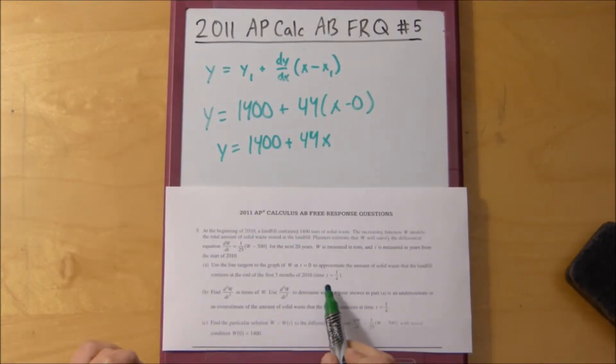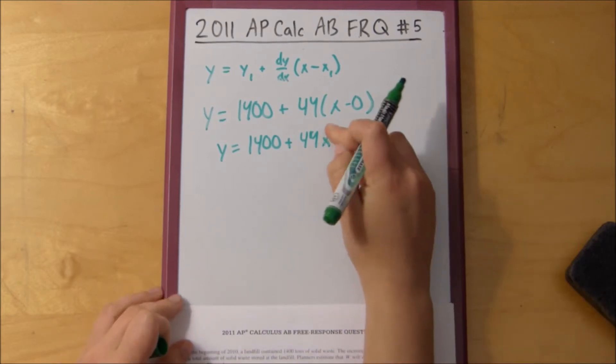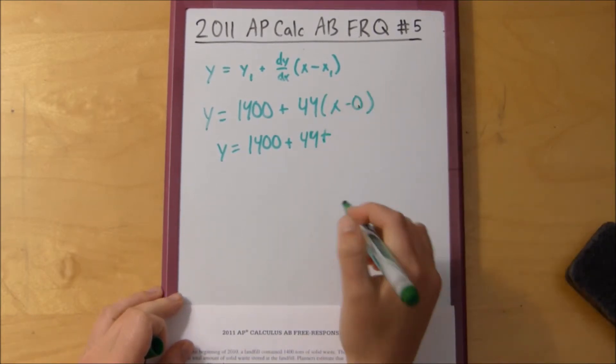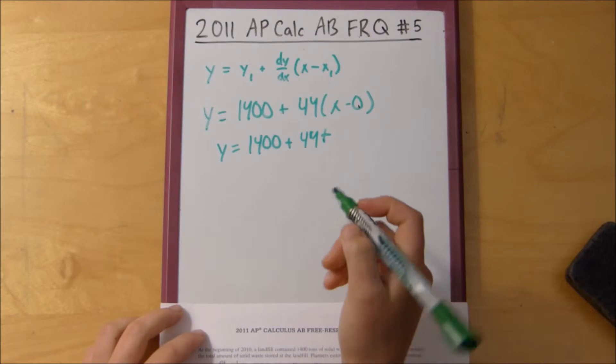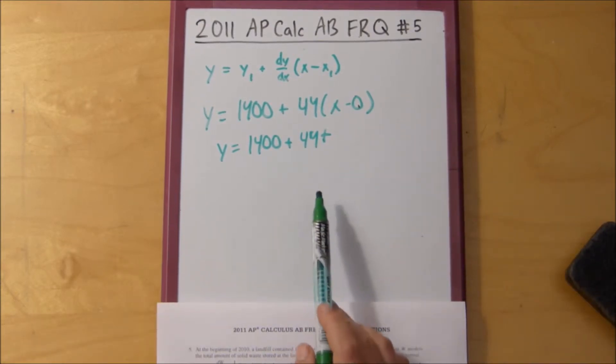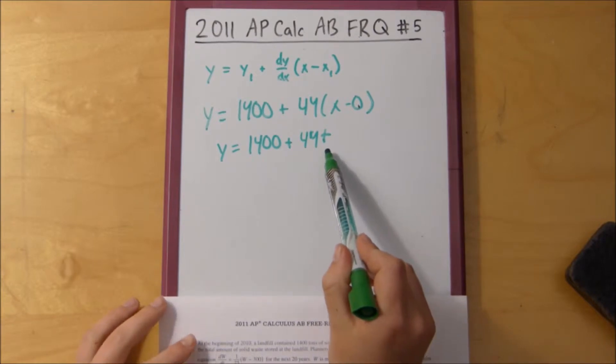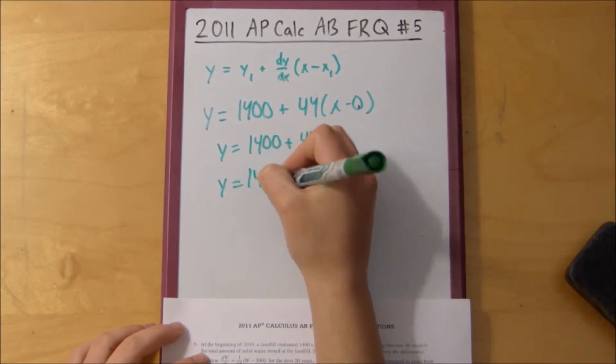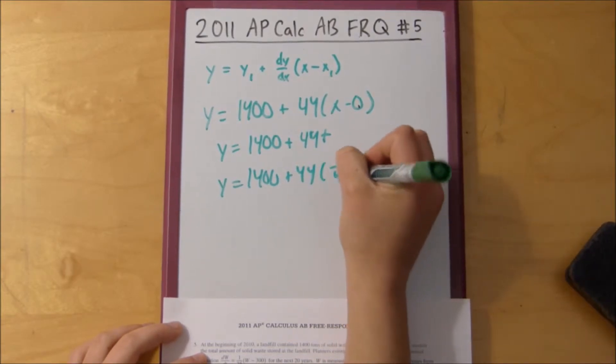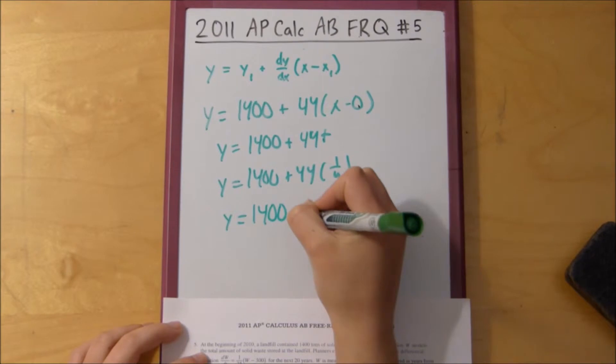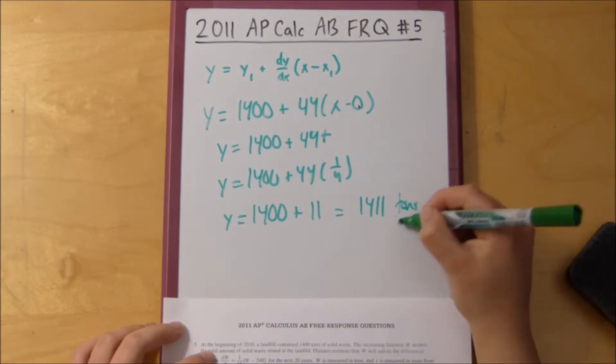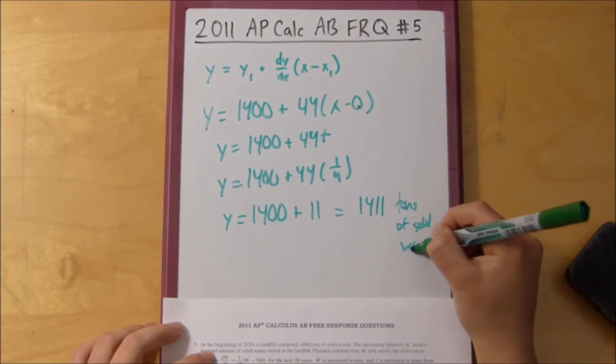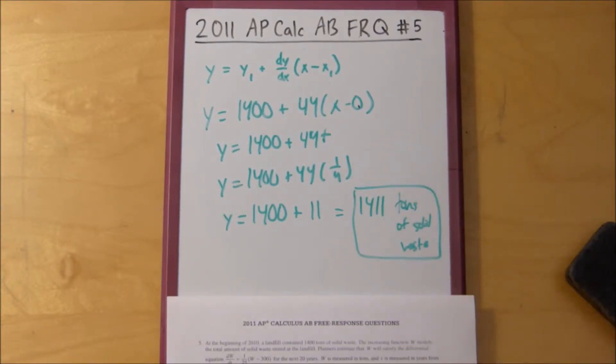So then what we do is we simply plug in t, we simply plug in 1 fourth for t. So in this I used x, I mean you could use t too, it's just for the general solution of a point slope equation, but you would probably get marked down if you used x, so make sure to use t. So we just plug in 1 fourth for t, so we get y equals 1400 plus 11, so 1411 tons of solid waste. That's the answer to problem number a.